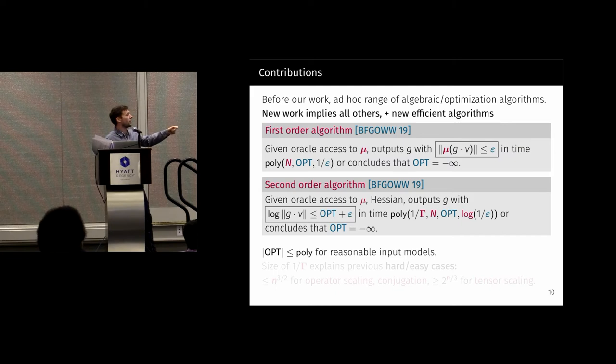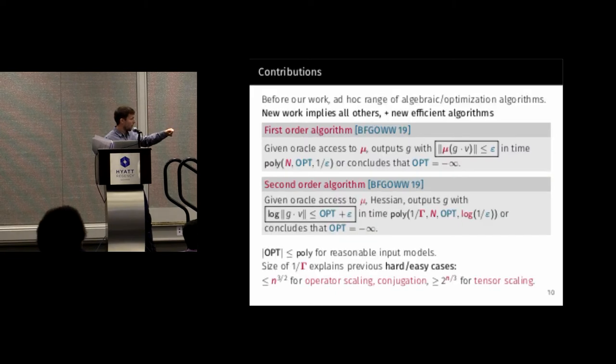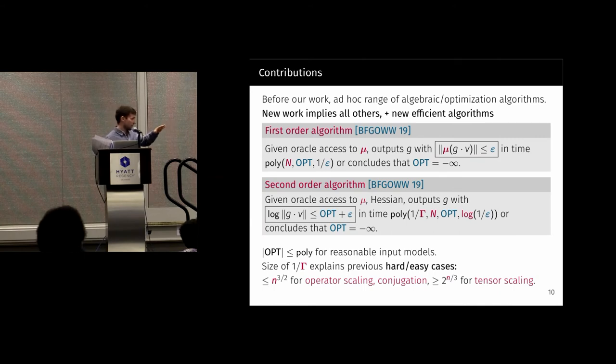Opt is always less than or equal to a polynomial for any reasonable input model. But this gamma can be large or one over gamma can be quite large. And the size of it explains all of the hard and easy cases so far. Operator scaling is an action that's considered very easy to deal with as is conjugation. And the one over the weight margin in those cases is a polynomial. It's n to the three halves. You prove this using just some submodularity argument about this Newton polytope. And tensor scaling, the case which I said is difficult, has weight margin at least 2 to the n over 3, which basically has to do with the fact that you can cook up some points in z to the n whose hyperplane through them comes really close to the origin.